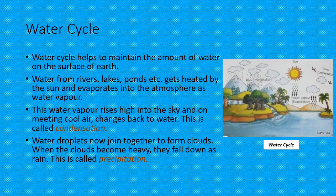Water droplets join together to form clouds. When the clouds become heavy, they fall down as rain. This is called precipitation.